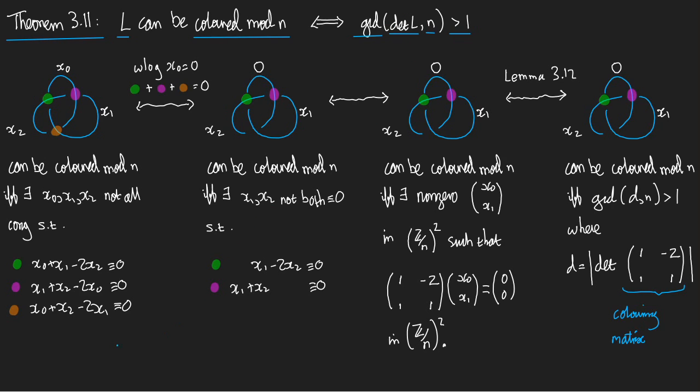So what I've got on the left of the screen here is a statement of what it means to be coloured mod n. And what we've got on the right here is something to do with the determinant, and we're going to work between them.